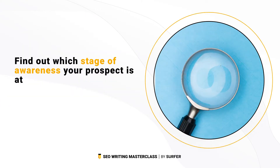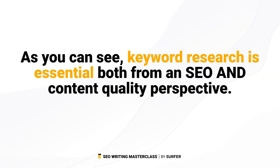Lastly, you can find out which stage of awareness your prospect is at. People ask different questions at different stages. Check out what kind of information Google is offering searchers and you'll be able to guess which stage of awareness your article should cover. For example, if most articles are product comparisons and listicles, you know that this keyword will be useful for prospects in the product awareness stage. As you can see, keyword research is essential both from an SEO and content quality perspective, and as SEO writers, we want to combine them both.